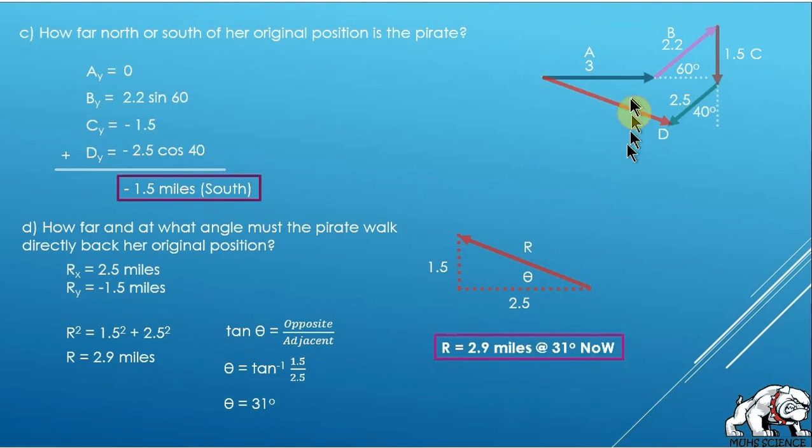Now had I solved it the resultant, it would have been still 2.9 miles. She would have started here, the angle still would have been 31 degrees, but it would have been south of east this time because that would have been the resultant of that. But I didn't ask that. I asked how far and at what angle must she walk back to her original position, so the direction of the arrow is flipped 180 degrees. All right, I hope that helps.